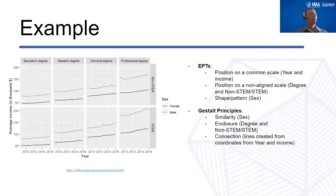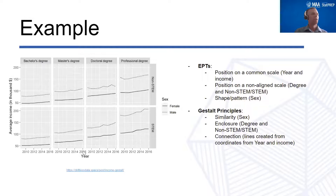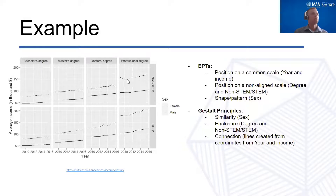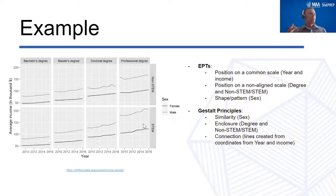Here is an example using these design principles for income across years for STEM and non-STEM areas based on different degrees and sex. We're using elementary perceptual tasks — positioned on a common scale for year and income. We have similarity for different sexes as our Gestalt principle, enclosure for different facets, and connecting lines to see the trends. This makes a nice, clear graph that tells a compelling story.